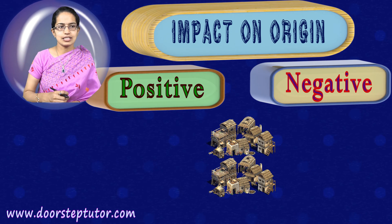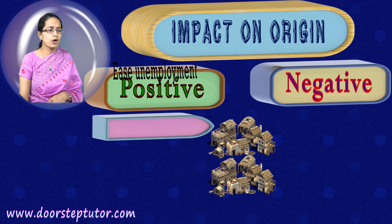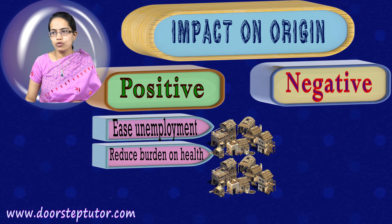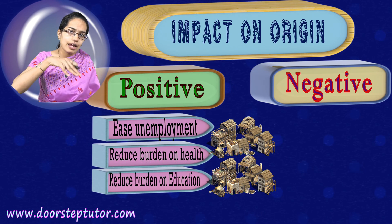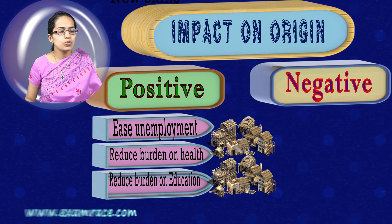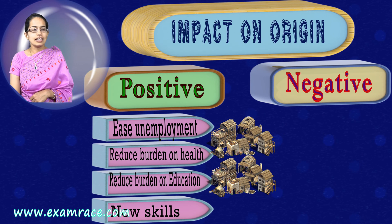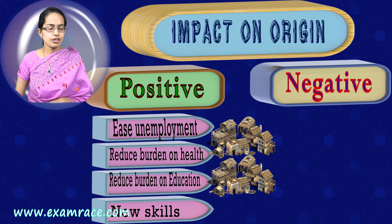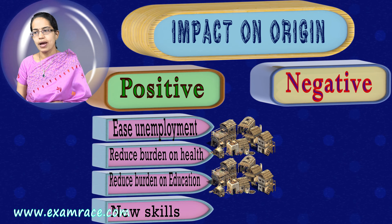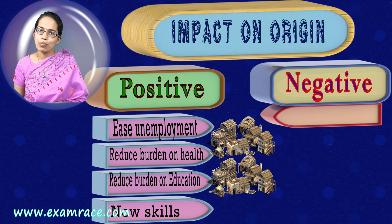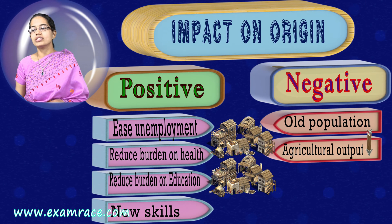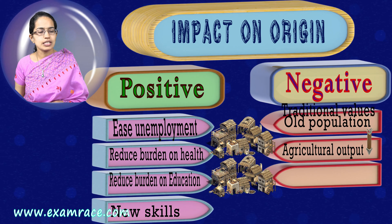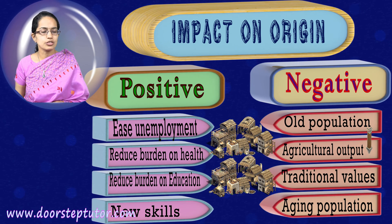For the origin, as people move out, the unemployment problem is relieved and there is reduced burden on healthcare and education. New skills could come into the region. However, the drawbacks include only the old population being left behind, the young population no longer present, agricultural output being impacted, and the traditional cultural roots of individuals being slowly and gradually lost.